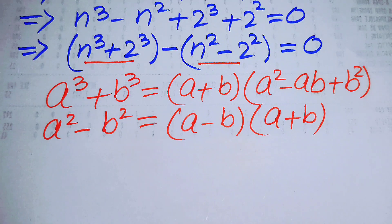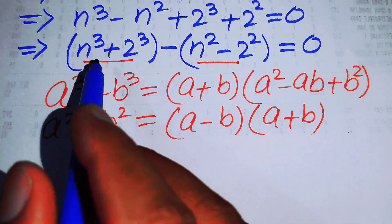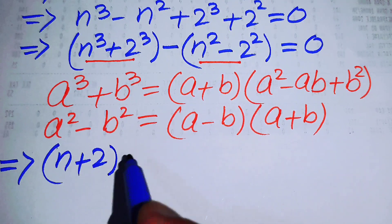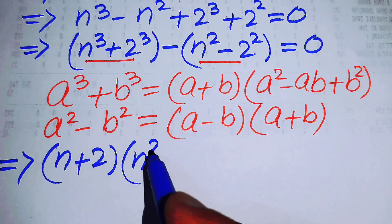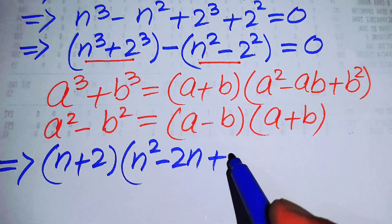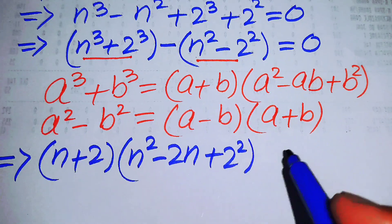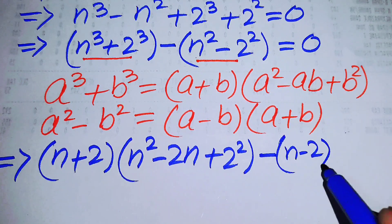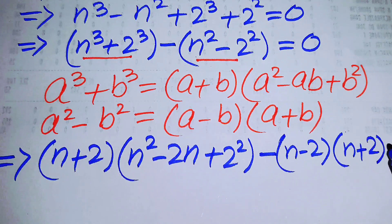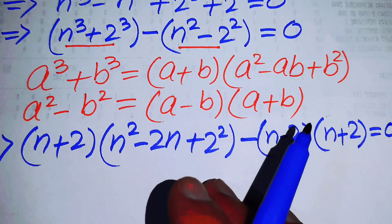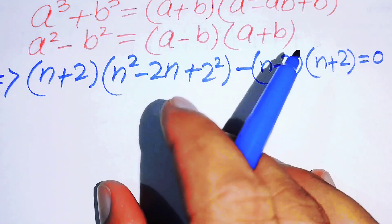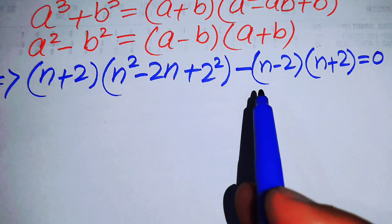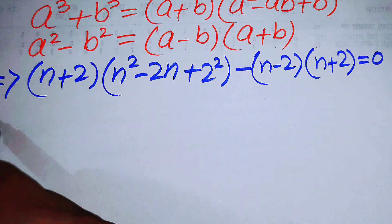Applying the sum of cubes formula to the first term gives (n + 2)(n² - 2n + 4), and applying the difference of squares formula to the second term gives minus (n - 2)(n + 2), and the whole equation equals 0. We notice that (n + 2) is present in both factors.